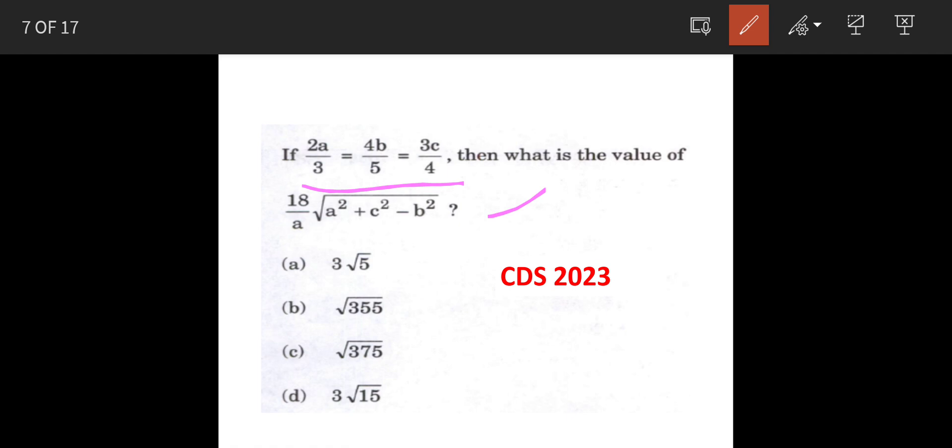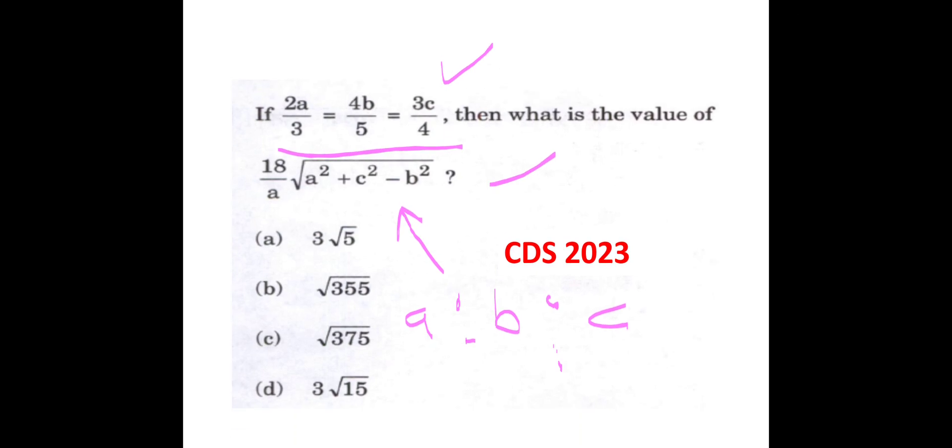So, we are having three unknowns, a, b and c. And with one equation, we cannot find out these values. So, we will find out their common proportions, a is to b is to c. And then put up the values in the equation here to know the value.